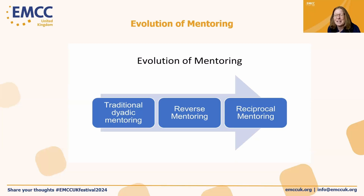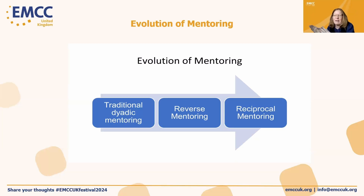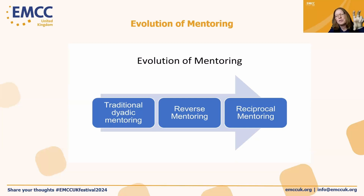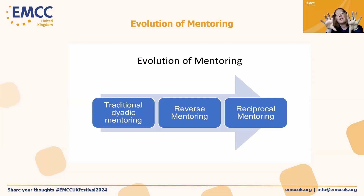I'm sure Paul will tell us all about his book in the next couple of slides. But if you look at this as a timeline, or alternatively view it differently — one is perhaps a more sponsorship-type model, which is the traditional one, and the others are more developmental models — then you can almost see reverse and reciprocal together as a group.